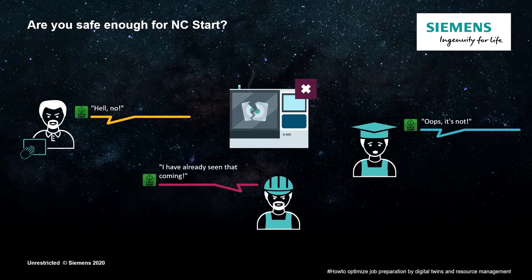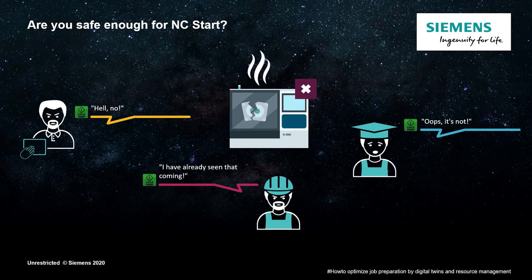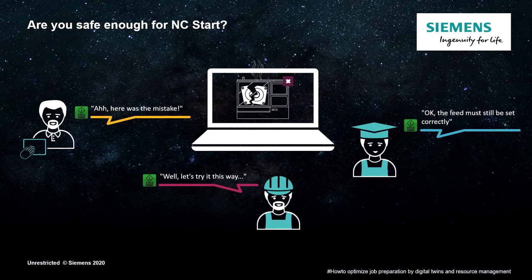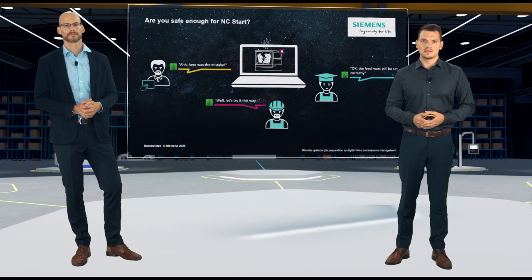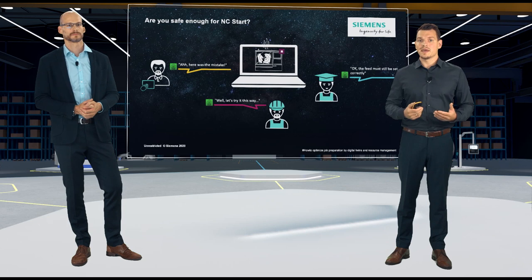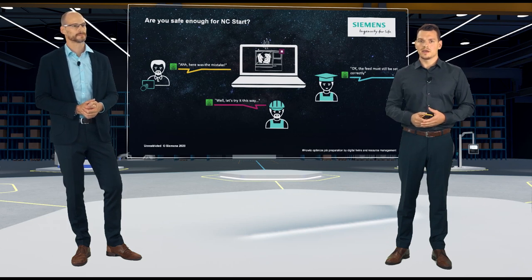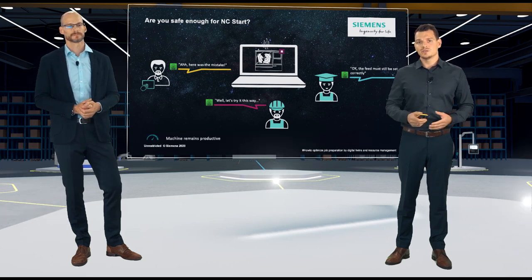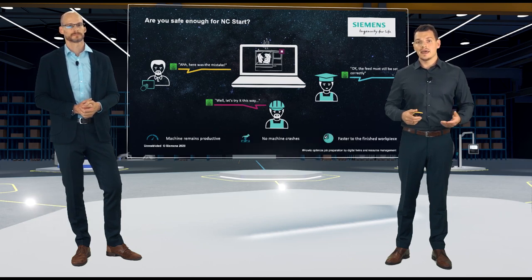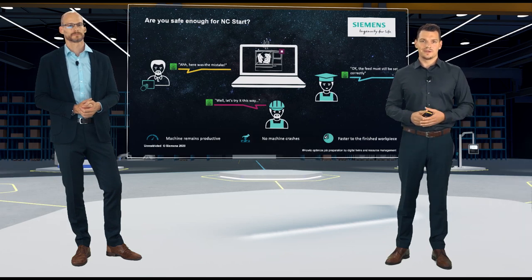Even a small thing could cause a collision in the workspace, which could result in damage of the workpiece, tool, or even the entire machine. It wouldn't be more effective to occur and see this damage in the virtual environment before pressing the NC start on the machine. Because there, you have an infinite number of attempts to do something wrong and try it out. And the machine remains productive without crashes, long downtimes, and you get faster to the finished workplace.